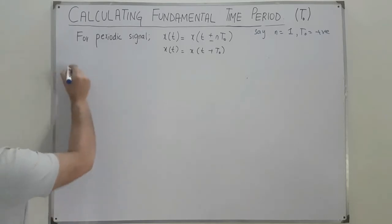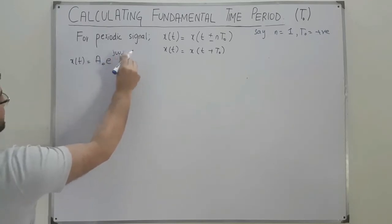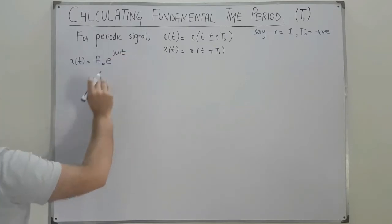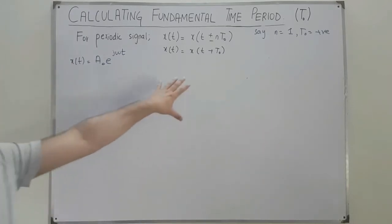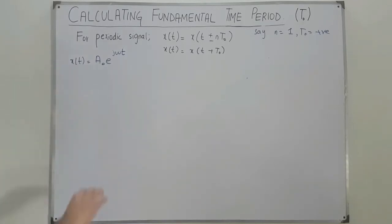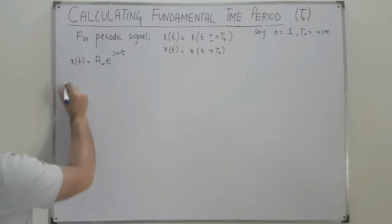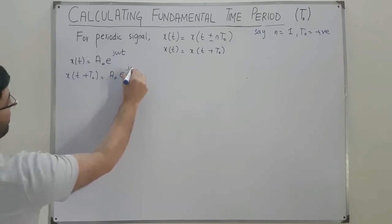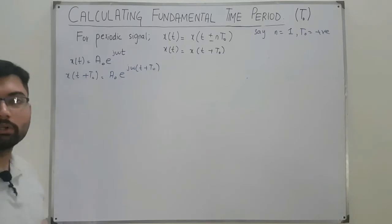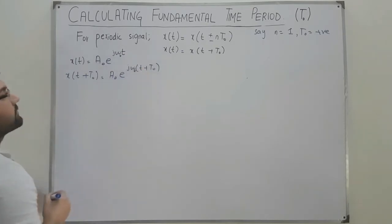Coming back to the topic, consider a signal x(t) = A₀ · e^(jω₀t). This is a signal we will see in great detail later; for now we are just taking an example to prove this formula. Let's say this signal is periodic, and let ω₀ be the fundamental angular frequency.